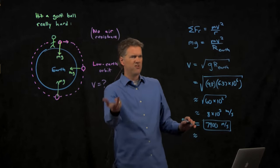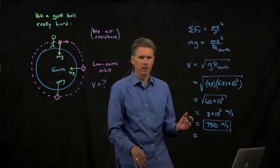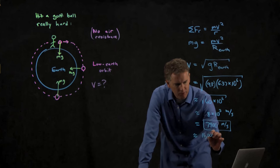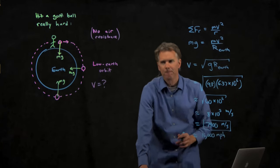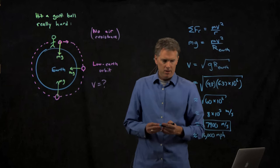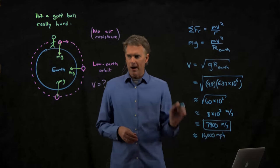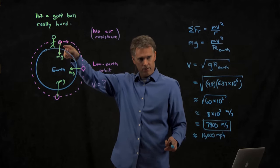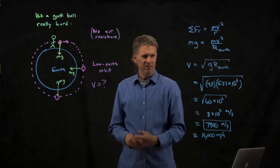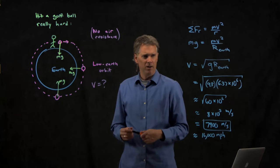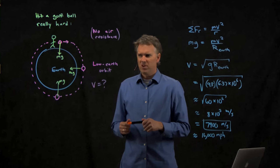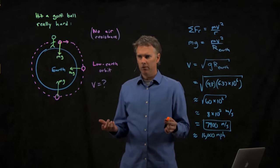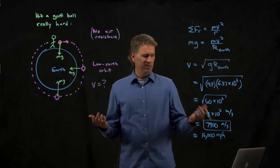7,900 meters per second. How fast is that in miles per hour? Remember the rule is just approximate it by doubling it. So 8,000 meters per second would be about 16,000 miles per hour. If you hit the golf ball at 16,000 miles per hour, it would orbit the earth. Can you do that? Can you hit a golf ball at 16,000 miles per hour? Probably not. Can we, as humans, get anything to move at 16,000 miles per hour?